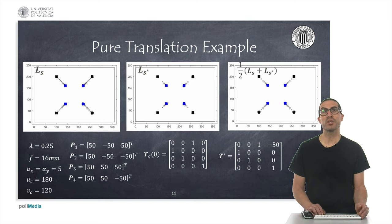Now I show the results of a pure translation example. As can be seen, the reference points also form a square but a smaller square, as if the points were currently observed with a zoom.